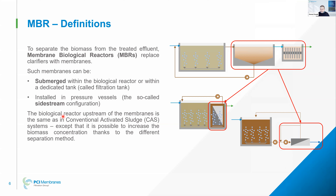A bit of definition about MBR, so that we are all on the same page. An MBR is basically combining a biological reactor — conventional activated sludge type, usually suspended growth — with a membrane to separate the biomass. It replaces the clarifier and possibly also tertiary filtration treatment. The membrane can be immersed — these are called submerged MBRs — or the membranes can be placed into vessels outside the tank where we have the activated sludge, which is called the sidestream MBR.